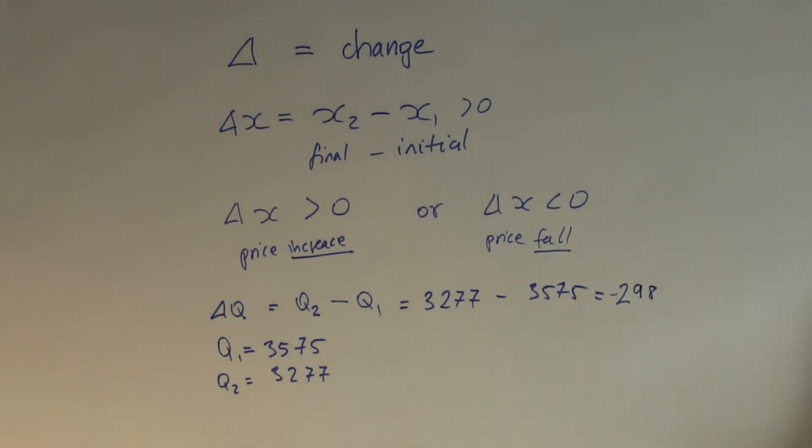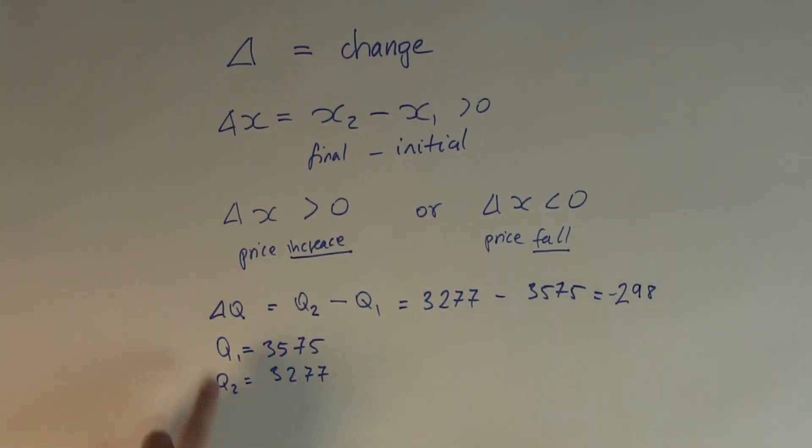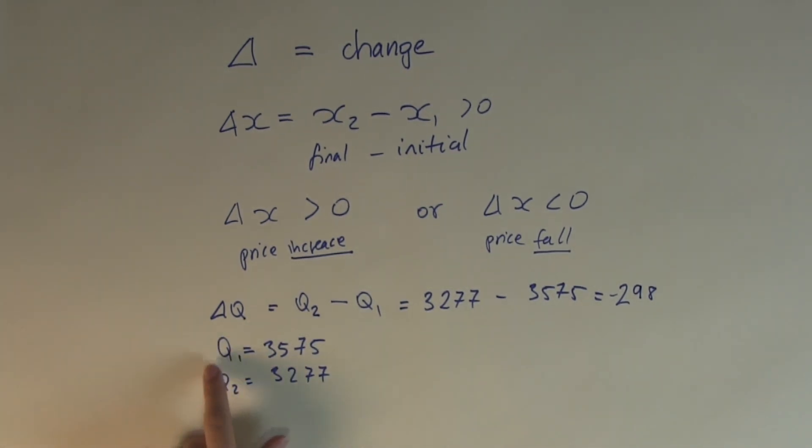Now what does it tell us? It tells us the obvious, which we would already know by just looking at the quantities, that the demand has dropped from 3575 to 3277. So remember, every time you see a negative change, that means a fall, a decrease, or a drop.